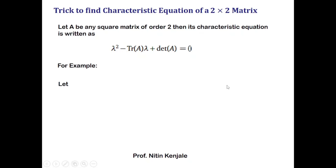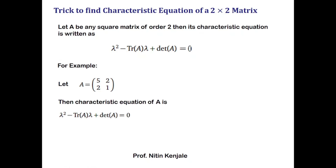For example, let A be this 2×2 matrix. Its trace is 5 plus 1, that is 6, so we will put 6 as the coefficient of lambda. Its determinant is 5 times 1 minus 2 times 2, which is 1. So the characteristic equation of this matrix A is lambda squared minus 6 lambda plus 1 equals zero, from which you can find the eigenvalues.